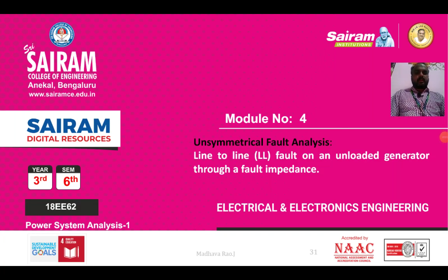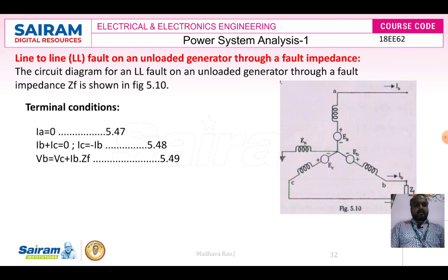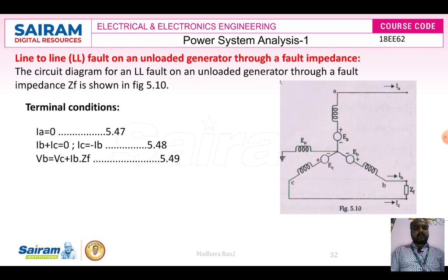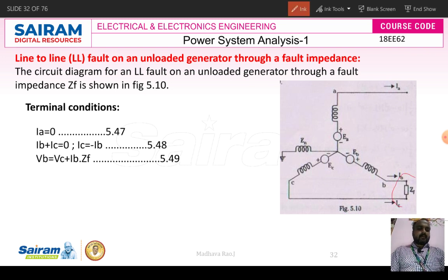In this video, you will learn about line-to-line fault on an unloaded generator through a fault impedance. We will see the synchronous generator equivalent circuit, which has A, B, C three phases with three induced voltages EA, EB, EC. A line-to-line fault occurs between B and C phases, where the impedance ZF is connected between B phase and C phase. Phase A is open circuited, and this synchronous generator is unloaded.